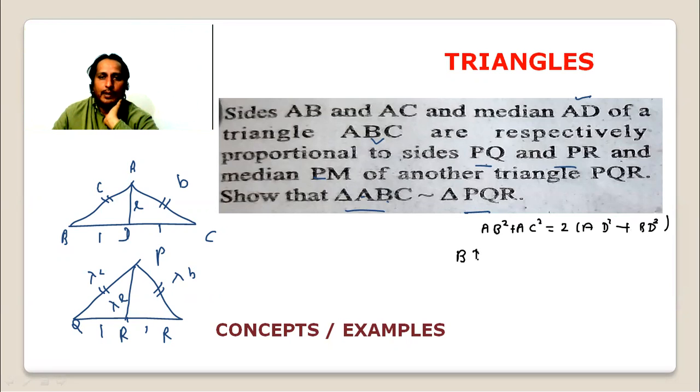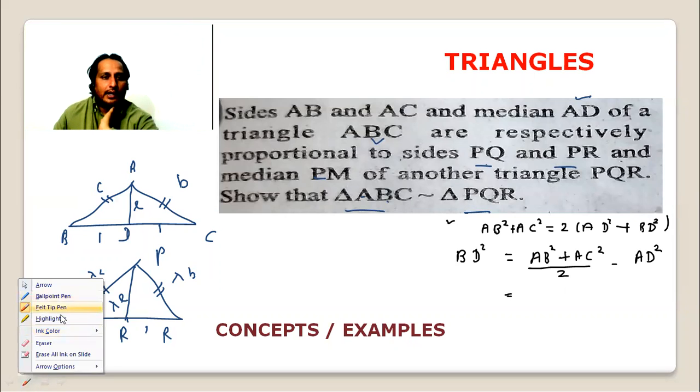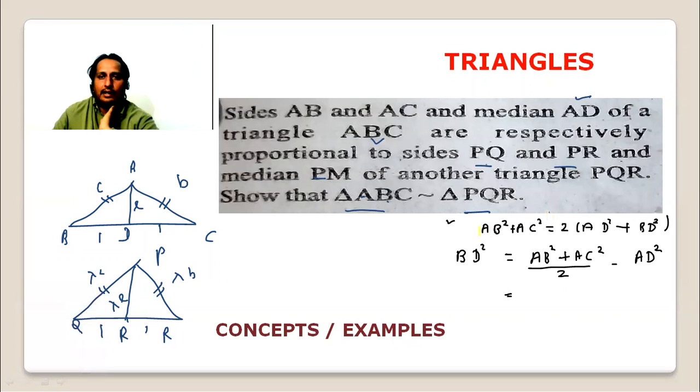Now I am interested in BD square. So what does BD square equal? This will be AB square plus AC square over two minus AD square. This is how Apollonius' theorem is written. We should remember this. With this help we can easily deal with it.